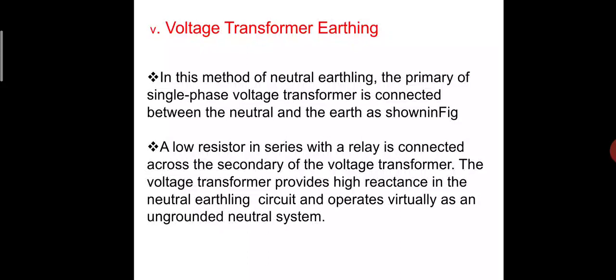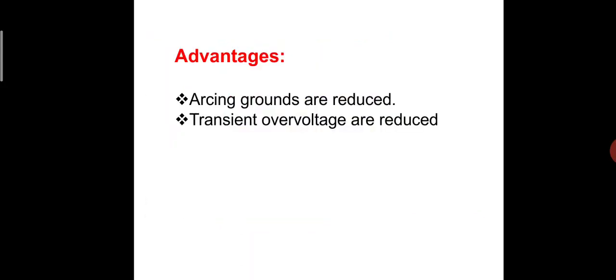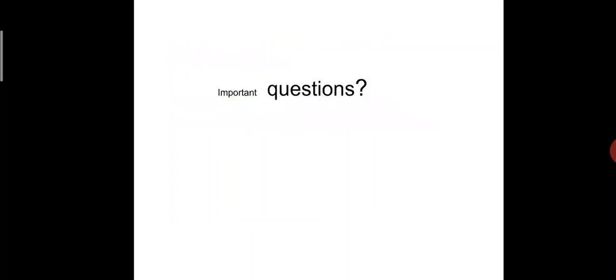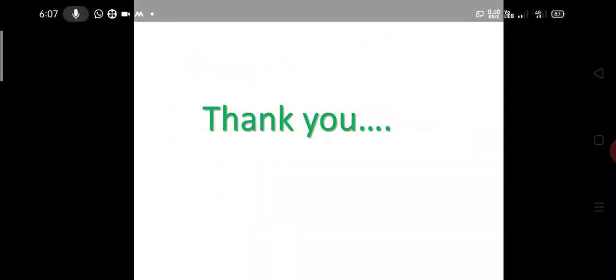Advantages of voltage transformer grounding: arcing grounds are reduced and transient overvoltages are reduced. Important questions from this class: Theratite type lightning arrester, types of neutral grounding — solid grounding, resistance grounding, arc suppression grounding, reactance grounding, and voltage transformer grounding. Draw the circuit diagrams and phasor diagrams and practice carefully. Thank you one and all.